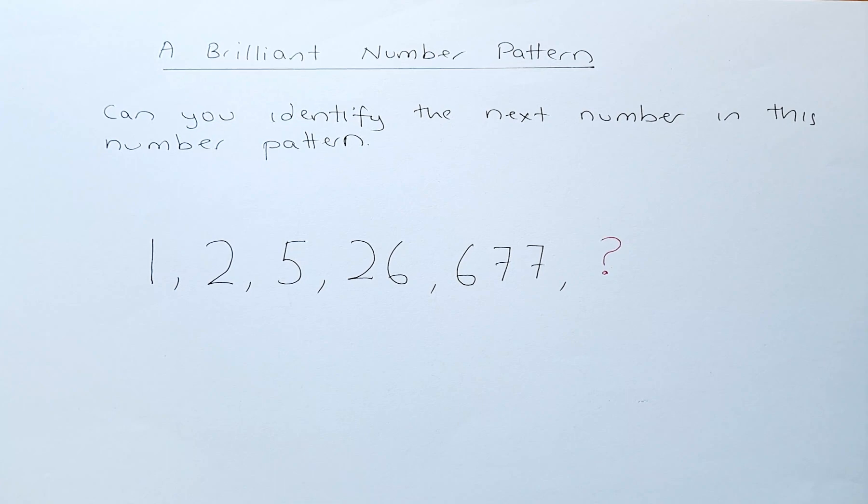So let's do this. 1, 2, 5, 26, and 677. It seems to be increasing at an alarming rate, so you cannot just add or multiply the numbers.